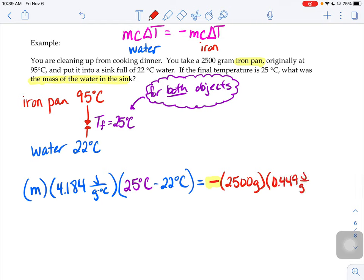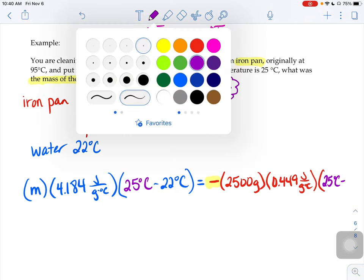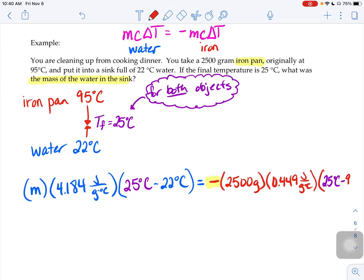And now for my delta T. The iron pan stops transferring heat energy once it hits 25 degrees. But it started at 95.